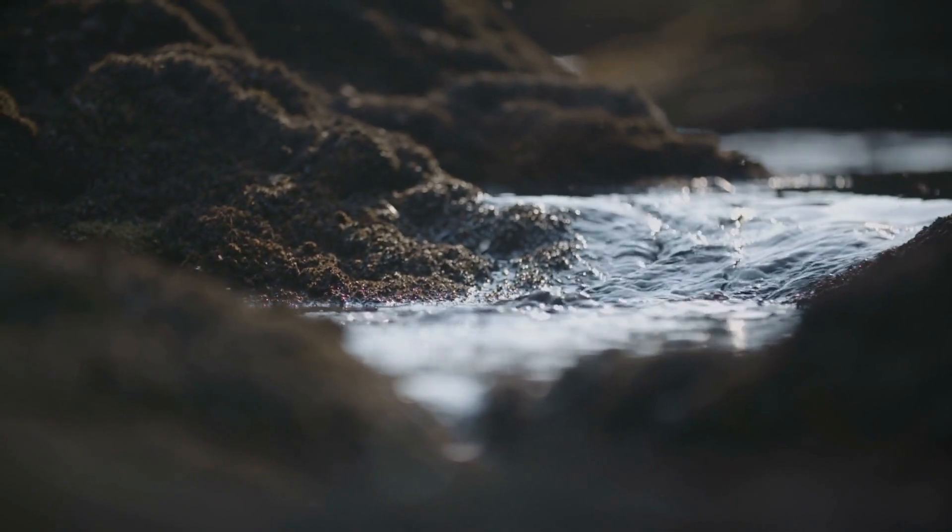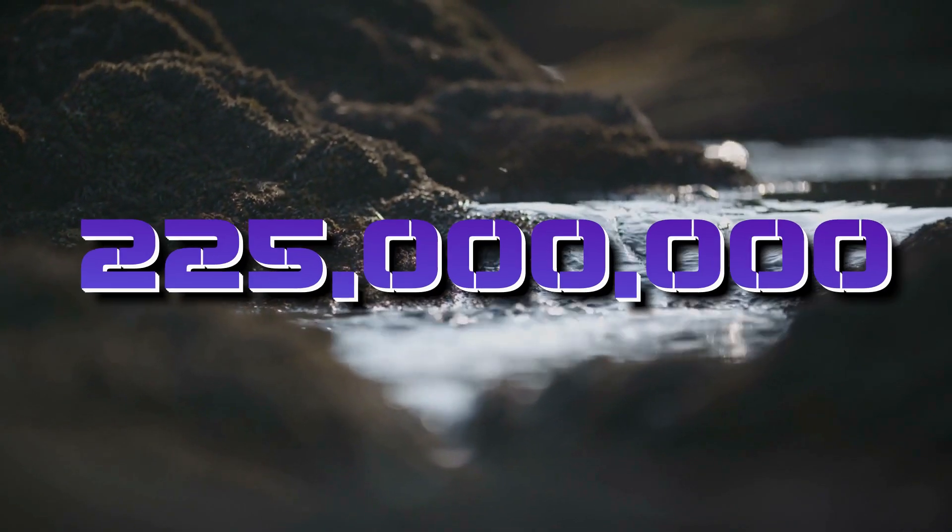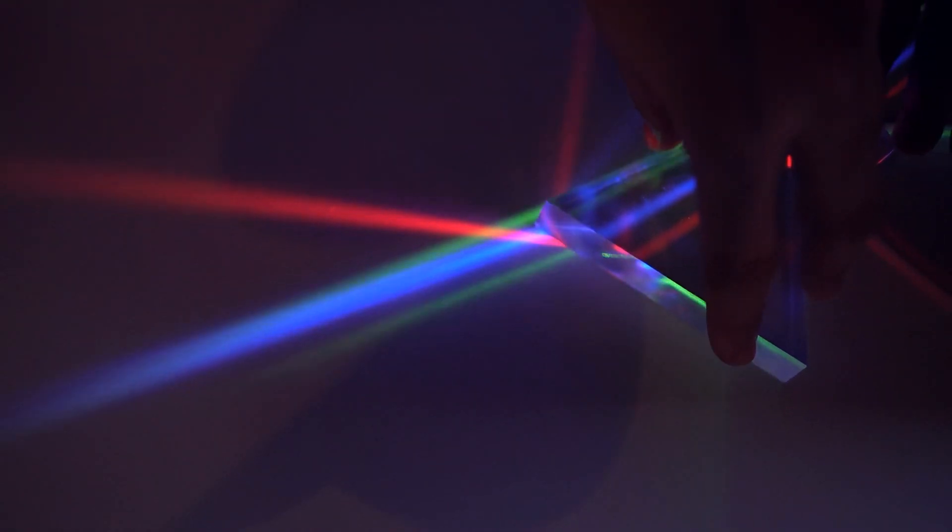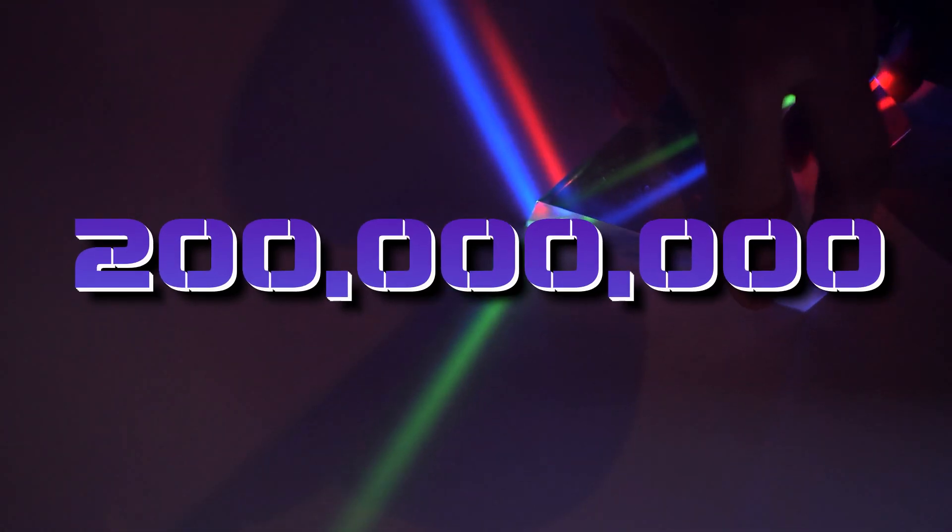In water, it moves even slower at around 225 million meters per second. And when light passes through glass, it can reach a maximum speed of about 200 million meters per second. So, while light has a constant speed in a vacuum, it does slow down when it travels through different materials.